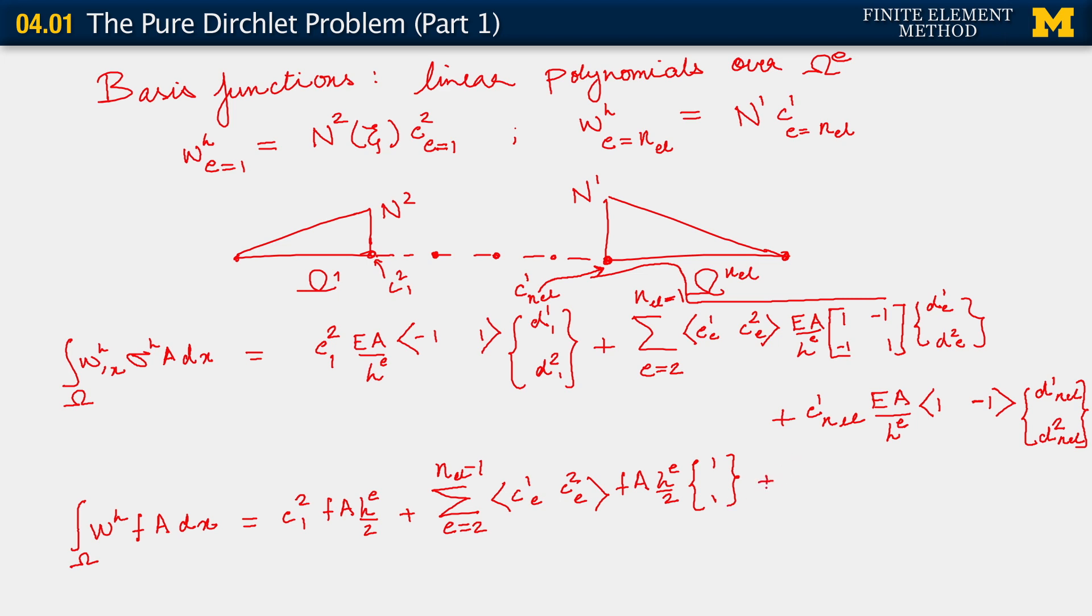And finally, from the very last element, we would get once again C_1 NEL. We would have F A H_E over 2. These are the contributions we would get.